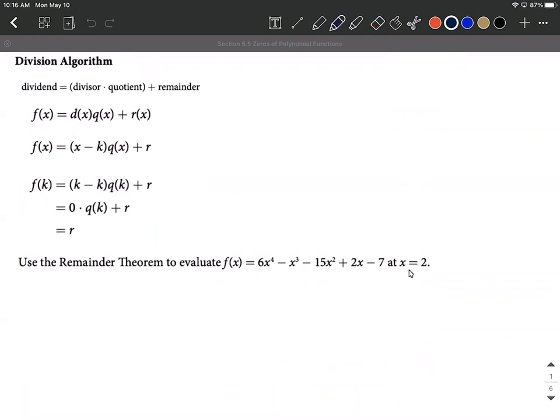So one way we have to do this is we can use the remainder theorem and plug in 2. So we can evaluate this at 2. So we have 6 times 2 to the fourth power minus 2 to the third power minus 15 times 2 squared plus 2 times 2 minus 7. And then we can either work this by hand one little step at a time or we can get the calculator out and get that to help us out. This eventually makes 25.